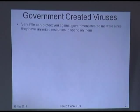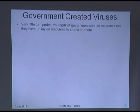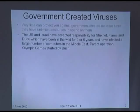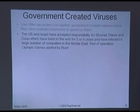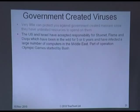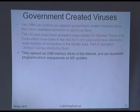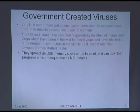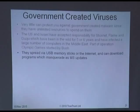The final issue is government-created viruses — very little can protect you against government-created malware. Governments have the best brains, unlimited resources, and recruit the best people. The US and Israel have accepted responsibility for Stuxnet, Flame, and Duqu, which have been around for five or six years. These viruses spread by memory sticks — just the active copy of a presentation can spread the virus. We're all infected and just have to accept it. The operation was called 'Olympic Games,' started by President Bush.